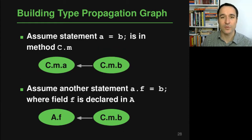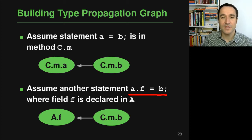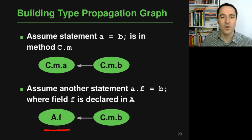To build the initial type propagation graph, the algorithm looks at all assignments in the program. For example, if you have a statement a = b in a method c.m, we get two nodes representing these two variables c.m.a and c.m.b with an edge corresponding to this data flow. As another example, if b is assigned to the field f of variable a, and f is a field of class A, then we represent this field as A.f — representing all fields f of all instances of class A — with an edge showing that variable b gets assigned to this field.